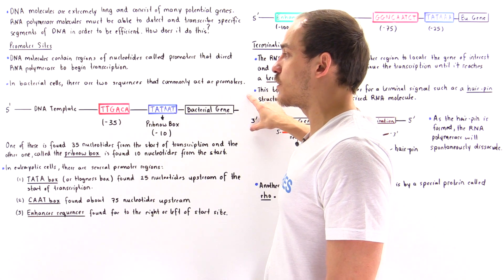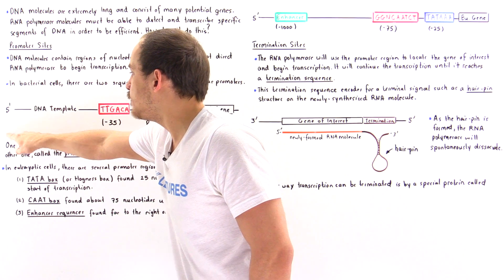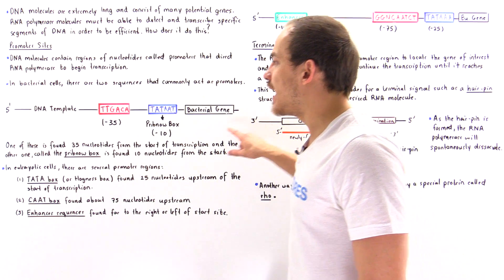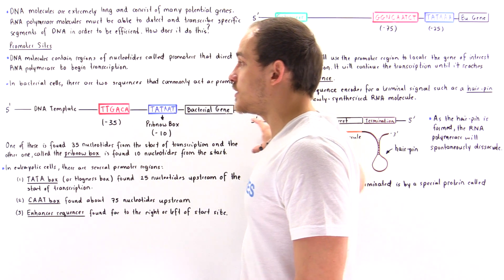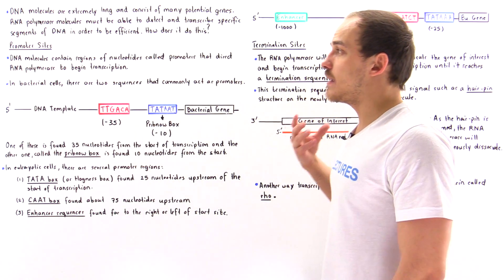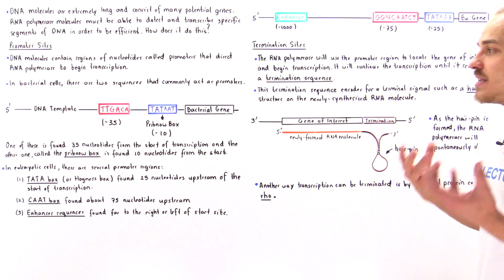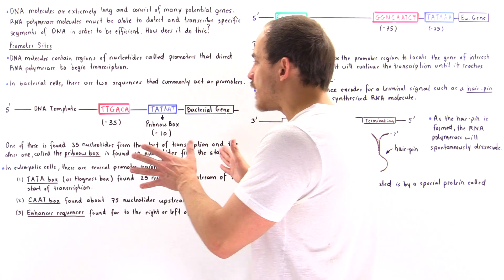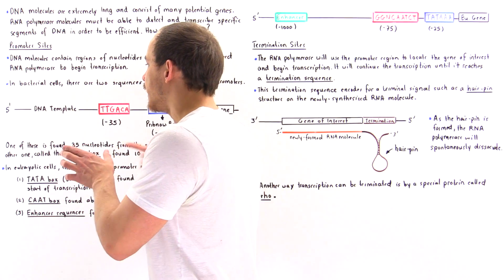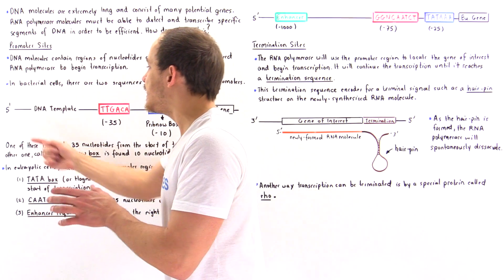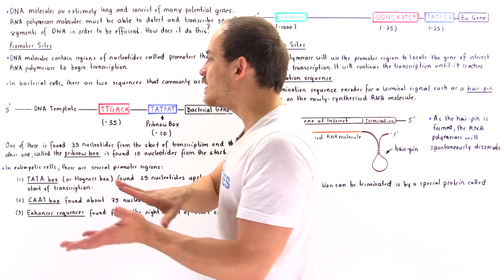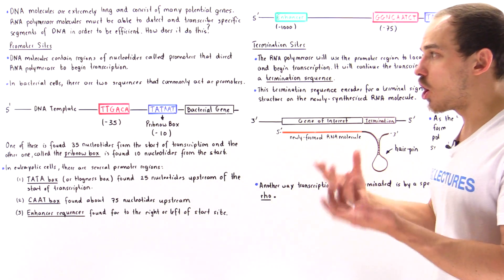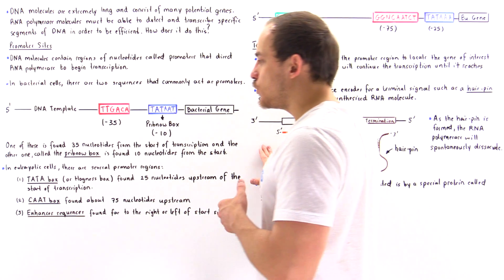Looking at the complementary strand, it begins on the 3' end and ends at the 5' end, and it is that particular DNA molecule that the RNA polymerase uses as its template. So in this diagram, the shown strand is not the template — the complementary sequence to it is the actual template the RNA polymerase uses.